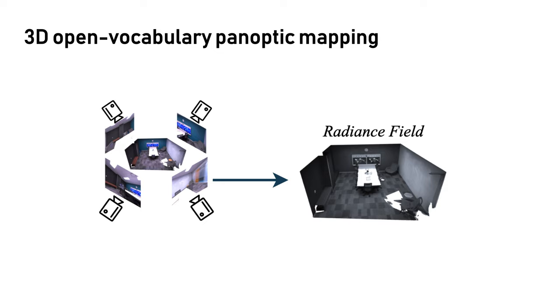In this paper, we aim to build a system for 3D open vocabulary panoptic mapping. Neural radiance field has been proven as a powerful tool to model complex 3D scenes based on a set of 2D images.